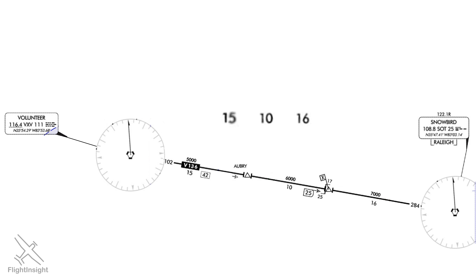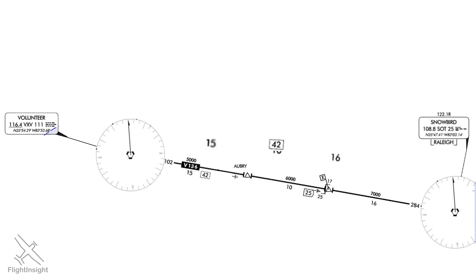Another nav aid you'll see on the en route chart is a localizer. Here are two localizer feathers for the parallel runways at Knoxville Airport. Typically, the en route chart will only show localizers that have some other navigational use besides just for the approach to the runway.